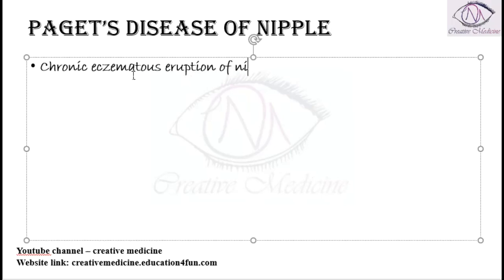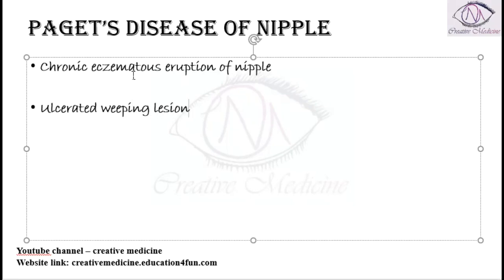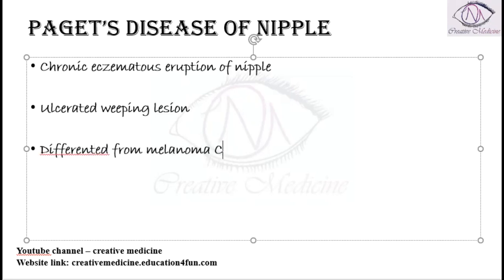This chronic eczematous eruption of the nipple may become ulcerated, resulting in a weeping lesion. An important differentiating point is that Paget's disease of nipple is differentiated from melanoma by CEA positivity.